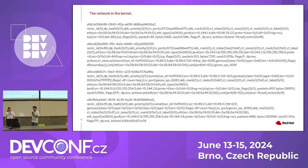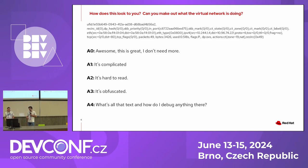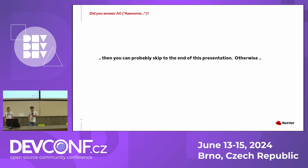So I guess we're done. This is how it works in the virtual network. Joke aside, can you actually make out something from this dump and figure out what the virtual network is actually doing? We have a couple of answers here. You can choose between 'awesome, this is great, I don't need more, it's enough,' or you can say it's complicated, hard to read, obfuscated — how can I figure out anything from here? So if you answered 'it's awesome,' then that's cool, but you can probably skip to the end of the presentation.